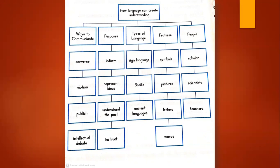The main elements of the answer include: ways to communicate, purposes such as to inform, represent ideas, understand the past, and instruct; types of language like sign language, Braille, and ancient languages; features like symbols, pictures, letters, and words; and people such as scholars, scientists, and teachers.